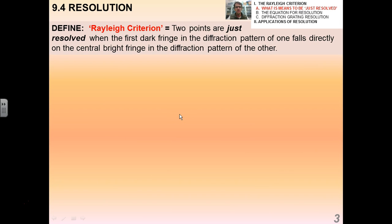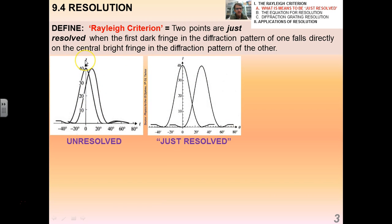Now this thing called the Rayleigh criterion means that two point lights or two objects are what we call just resolved when the first dark fringe in the diffraction pattern of one falls directly on the central bright fringe in the diffraction pattern of the other. What this looks like in my intensity against angle graph is like this. If they're just resolved, that is to say if we can tell them apart as two distinctly different objects, the first dark fringe of one of them lines up perfectly with the central bright fringe of the other. In this case over here they are unresolved, so this would be blurry like a bigger blob.